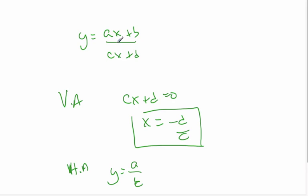However, if there is no—if a equals zero—then it's going to be y equals b over cx plus d, and then it's y equals zero as your asymptote.